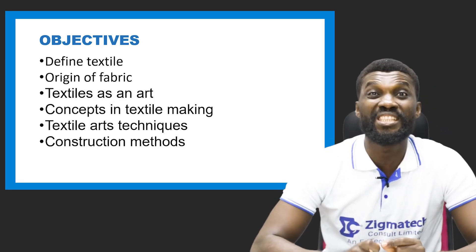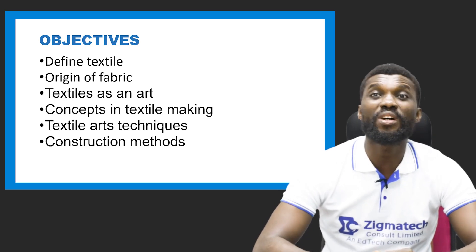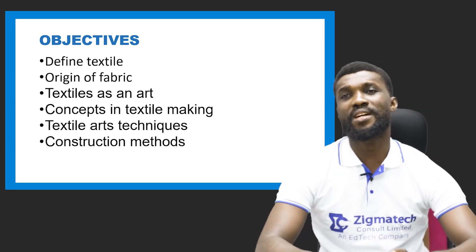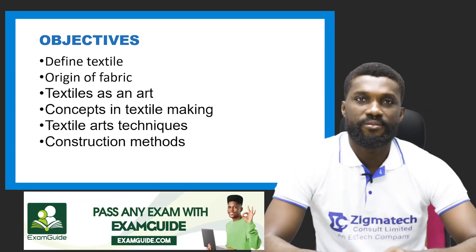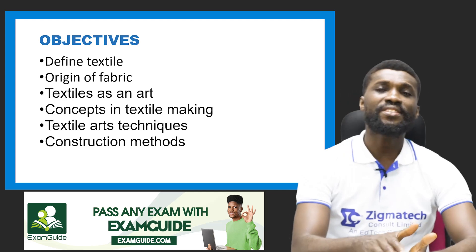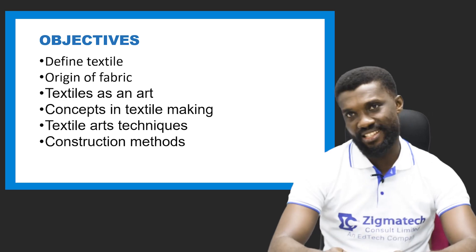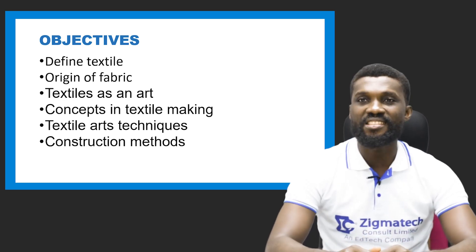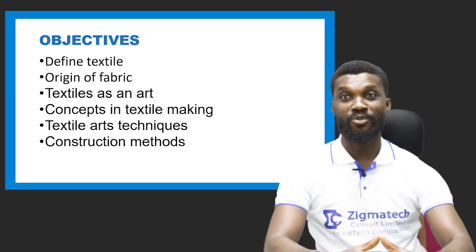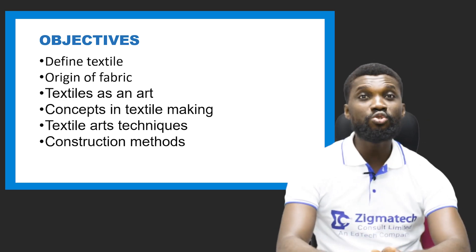First, we're going to define textile — what exactly is textile. Second, we'll look at the origin of textile fabrics. Then we're going to talk about textile as an art. After that we'll treat the concept in textile making. We'll also talk about textile art techniques — the techniques in textile design. And finally, we're going to look at the construction method of textile. These are the exciting subtopics we'll cover in this class.